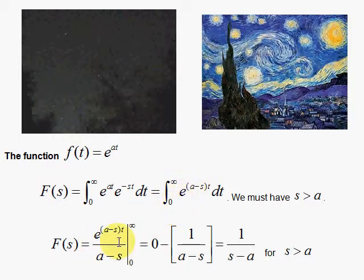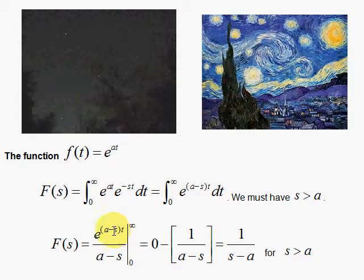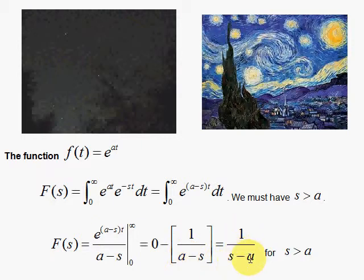And here with the a, it's a very similar integral. When we evaluate at the limits, here you must impose s greater than a, so that the s wins out with the minus sign and this behaves itself at infinity. It gives us 0. And then at the lower limit, you get e to the 0 power is 1. And the result is 1 over s minus a.